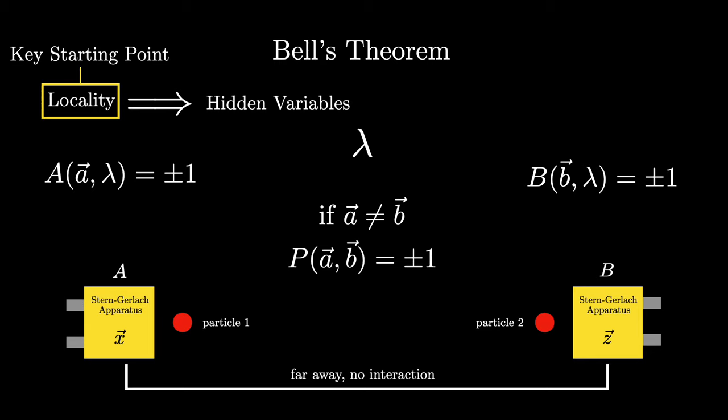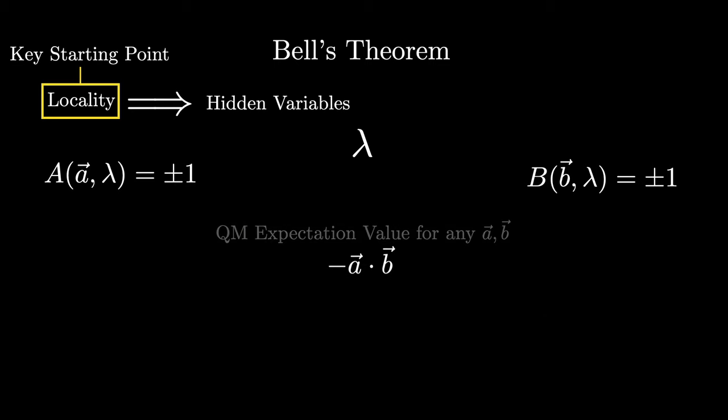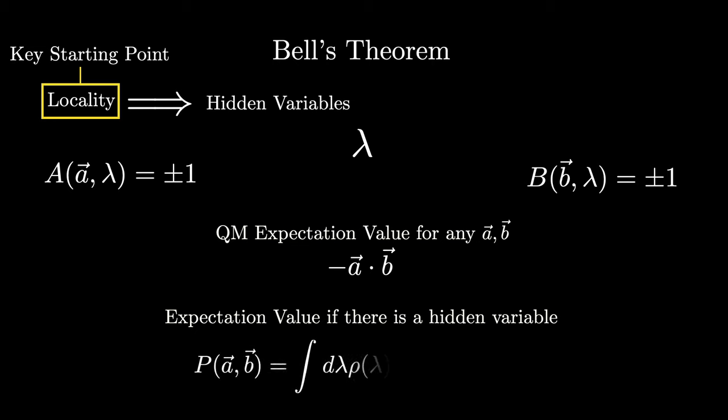If you consider any arbitrary orientation of the two Stern-Gerlach apparatuses and then run a large number of experiments, the expectation value or average result that quantum mechanics predicts is negative A dot B. Now if there is a hidden variable, the expectation value will be written in this way, where rho is the probability distribution of lambda.